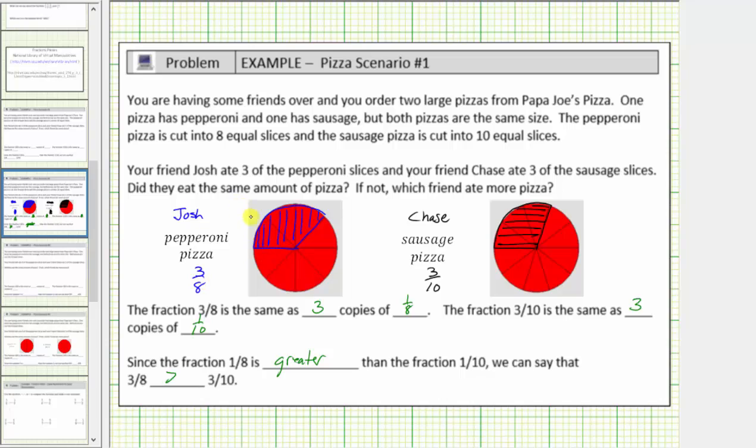Each piece that Josh ate was one-eighth of the pizza, and each piece Chase ate was one-tenth of the pizza. So let's go ahead and state Josh ate more pizza.